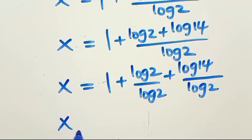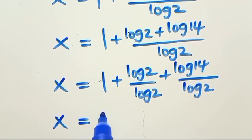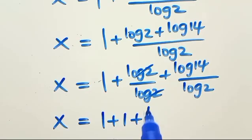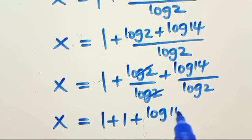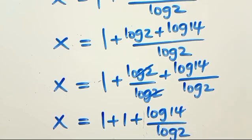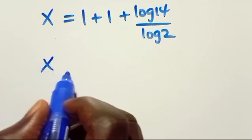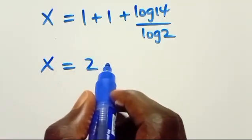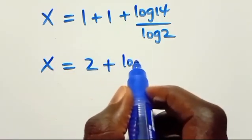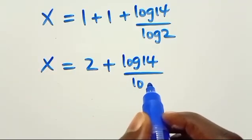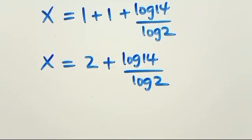Splitting the fraction: x equals 1 plus log 2 over log 2 plus log 14 over log 2. Since log 2 over log 2 equals 1, we get x equals 1 plus 1 plus log 14 over log 2, which is x equals 2 plus log 14 over log 2.